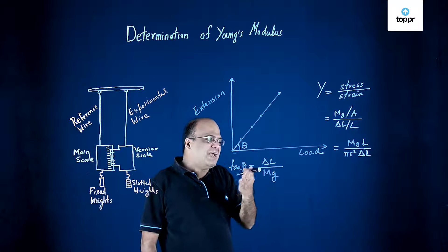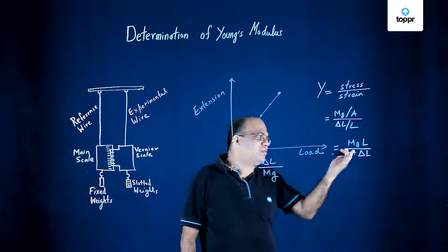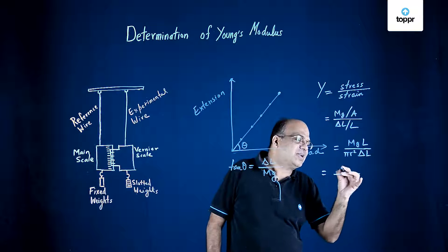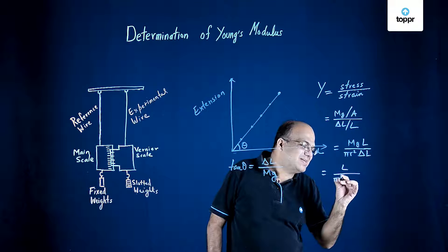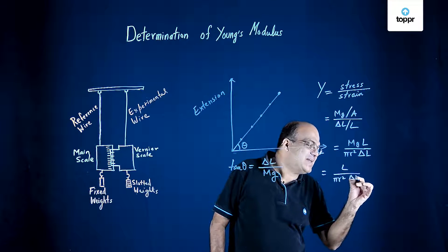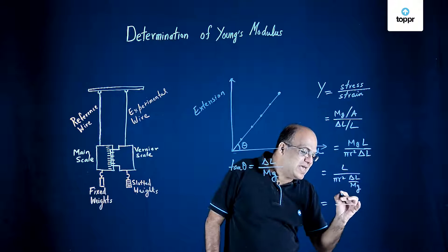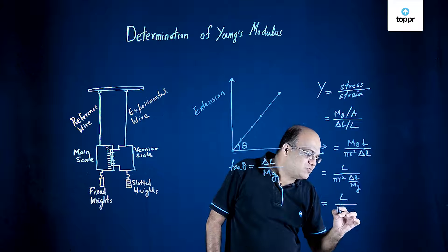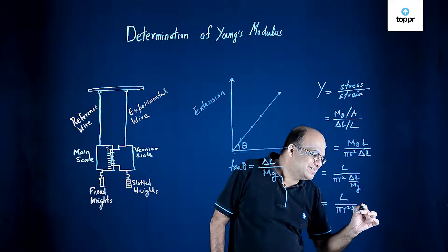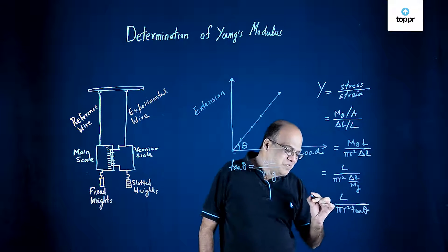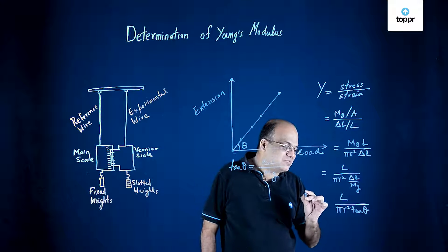Now this becomes mg, area is pi r squared, delta L is here, and L will go upstairs. But we know tan theta is delta L by mg. So we can take it down there. So we get L by pi r squared delta L by mg. So this becomes L by pi r squared tan theta.